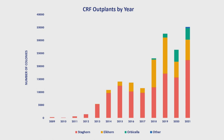What we needed was, one, a new way to monitor our outplants, and two, a new way of monitoring that would actually generate metrics that reflect what the population is doing, rather than simply the individual colony. We've shifted in our restoration goals, so now we need to shift in our monitoring goals — going from individual colonies to the population.